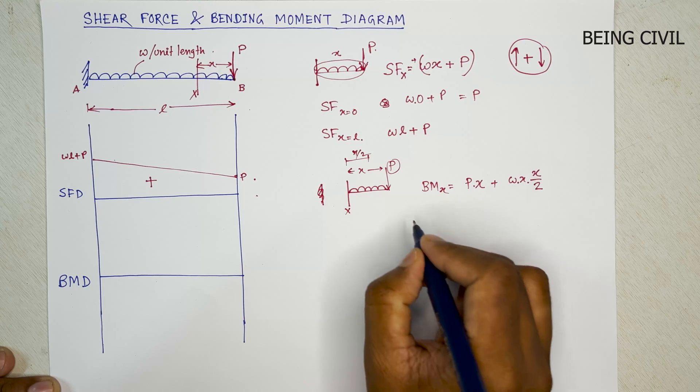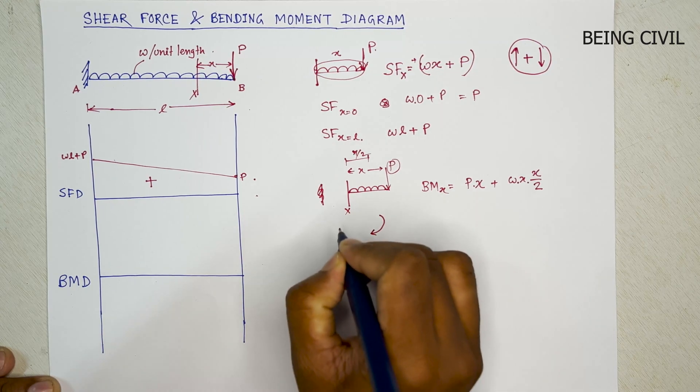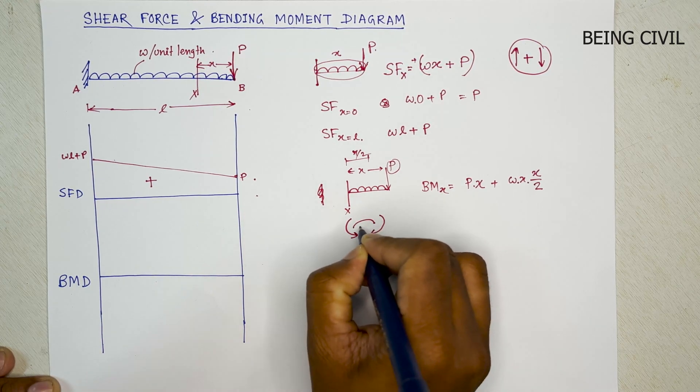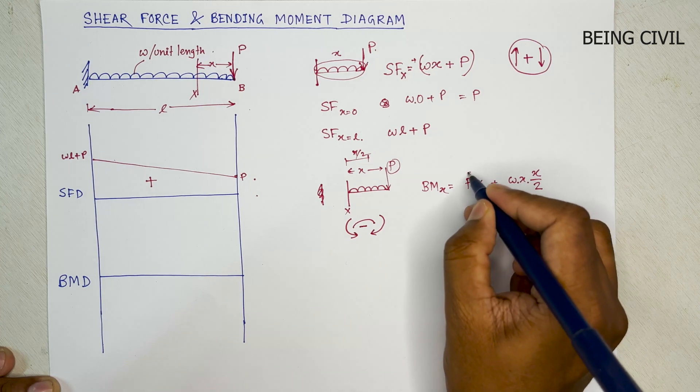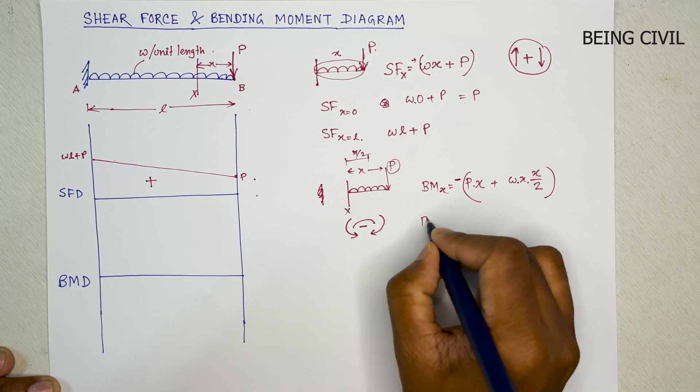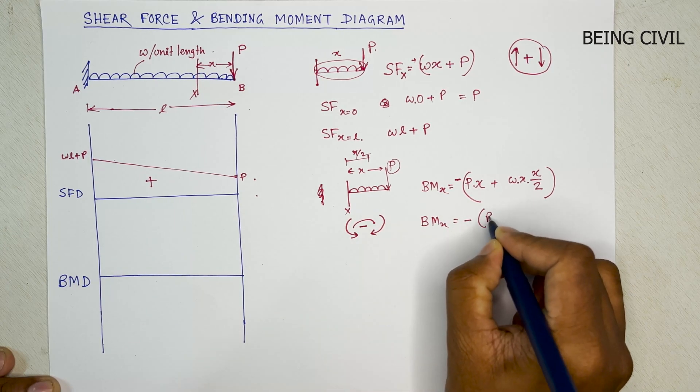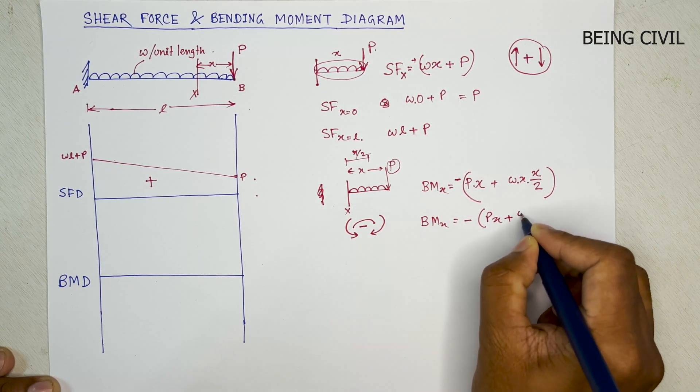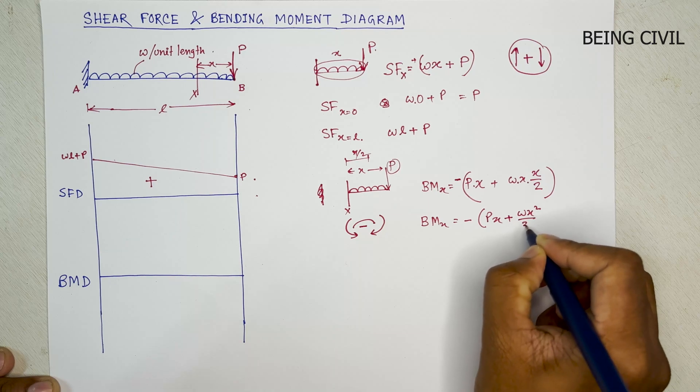And the nature of the force is like this, so hogging, so it is negative. So the bending moment is negative. So BM at X will be minus PX plus WX squared by 2.